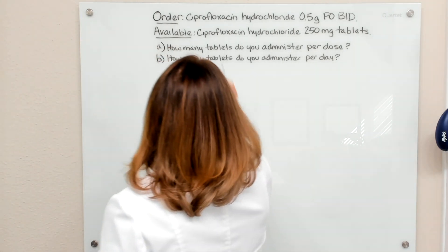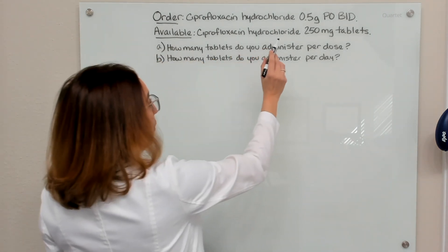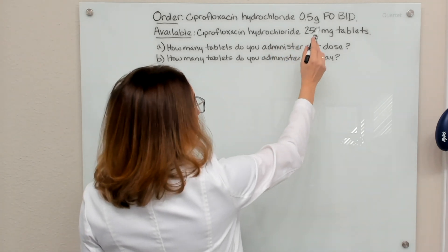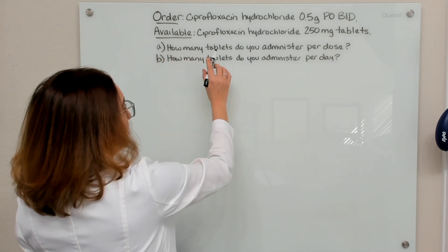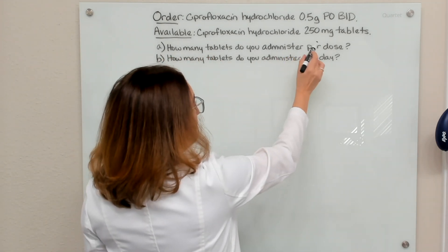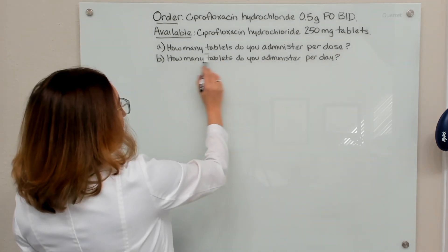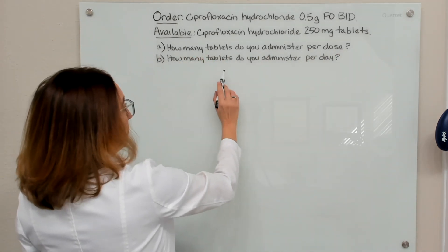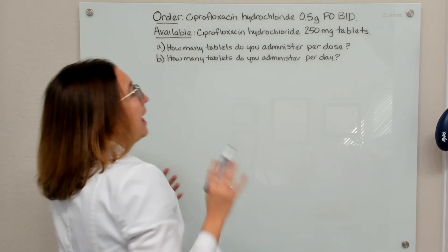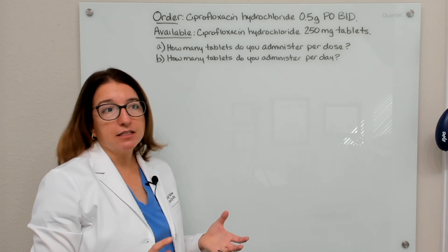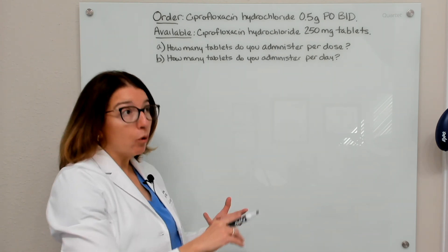So with this problem, we have an order for ciprofloxacin 0.5 grams PO BID, so twice a day. What we have available is ciprofloxacin in 250 milligram tablets. We're being asked how many tablets do we administer per dose, and how many tablets do we administer per day? For part A of this problem, I can solve this with dimensional analysis, ratio and proportion, or the formula method.